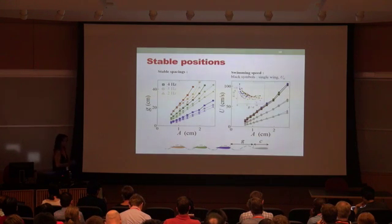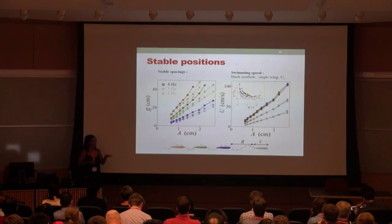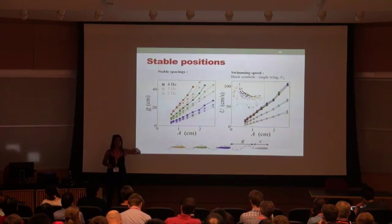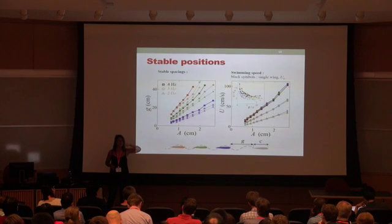So the question now is how do we understand that graph? How do we understand what sets the stable position? When you think of it, when you change the frequency amplitude or Reynolds number, basically you're changing the trajectory that it's doing. The trajectory is a combination of the up and down motion and the forward motion.